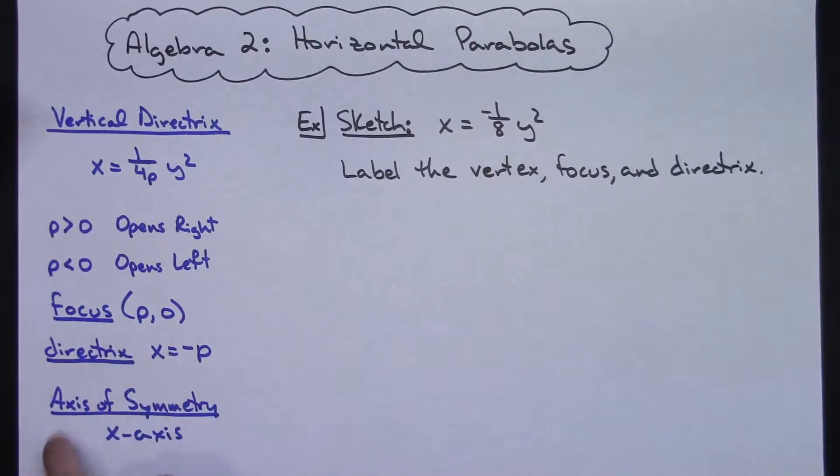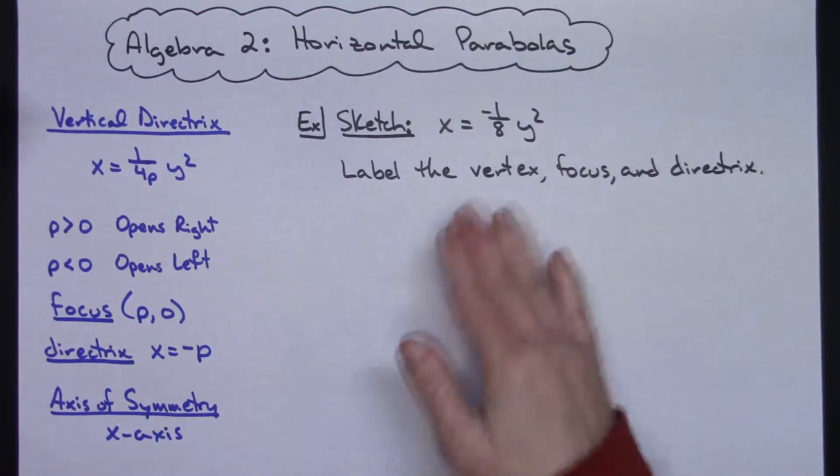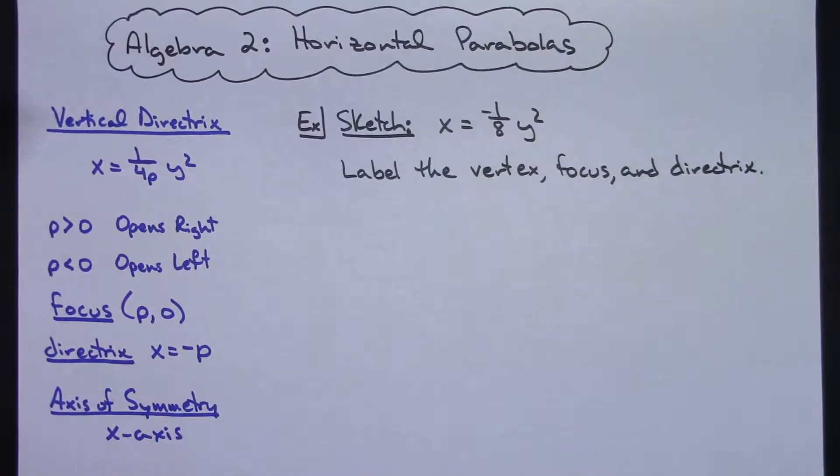Our focus will be at p, 0. Our directrix will be at x equals negative p and our axis of symmetry then is going to be at the x-axis. We are assuming that we've not shifted away from the origin on this.